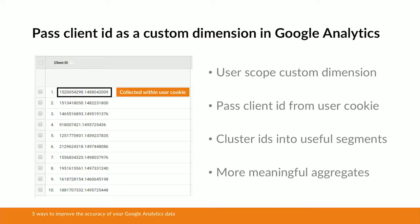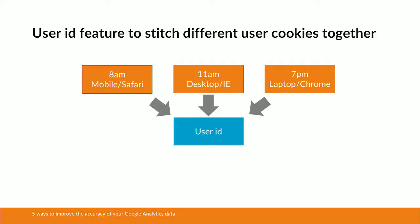You can create lots of useful segments, analyse the users based on those smaller segments, and have more meaningful aggregates — just generally getting more from the users metric overall. Once you've got the client ID set up and you're using this data effectively, the next step is to enable the user ID feature in Google Analytics to stitch different user cookies together.